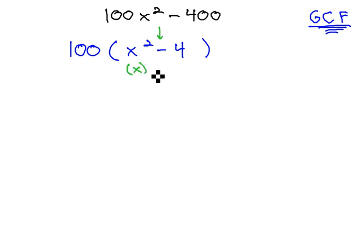The square root of x squared is x, and the square root of 4 is 2. This means we can factor it, keeping the GCF of 100 out front into the sum and difference of the square roots: x plus 2 and x minus 2.